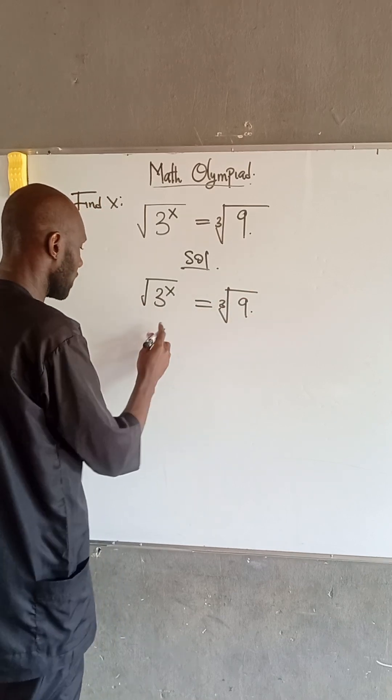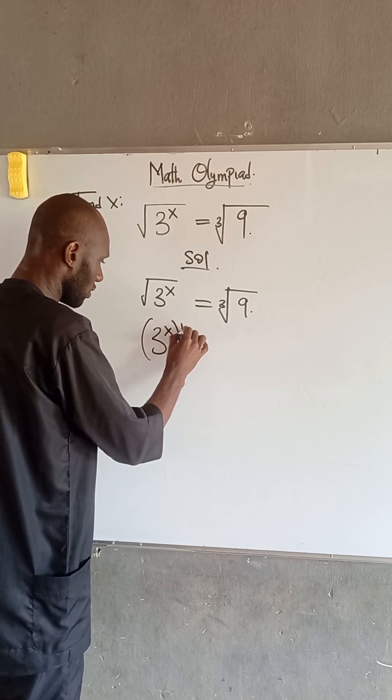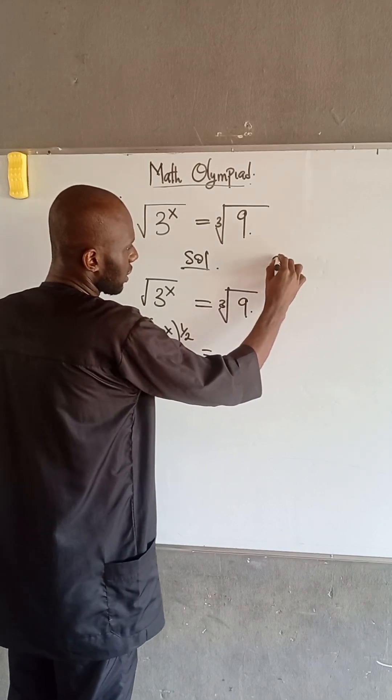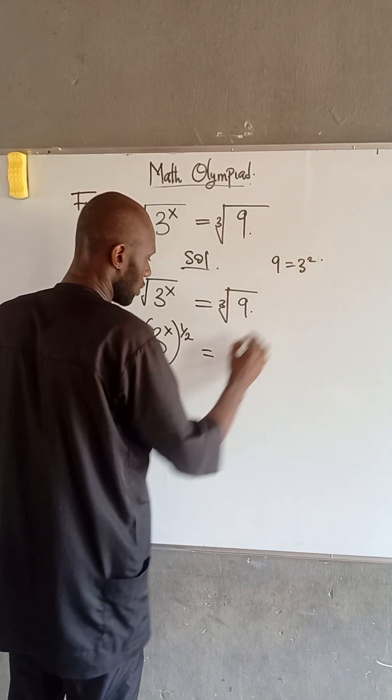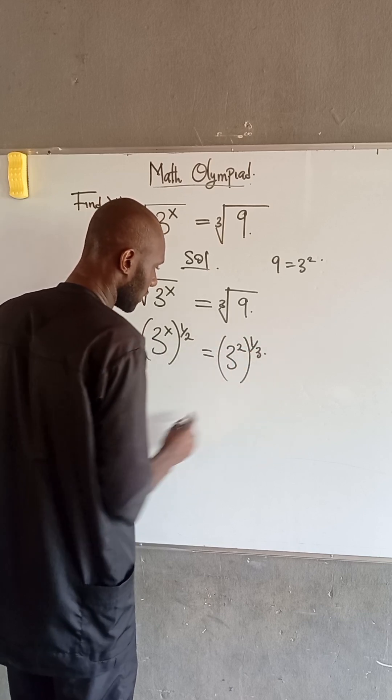Now, at this point, this can be expressed as 3 to the power of x all to the power of 1 divided by 2. Also, 9 can be expressed as 3 squared. So we have 3 squared all to the power of 1 divided by 3.